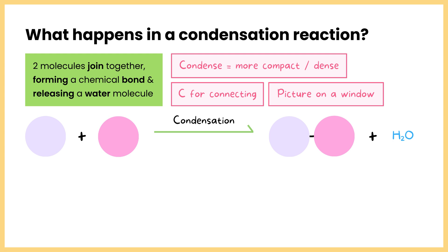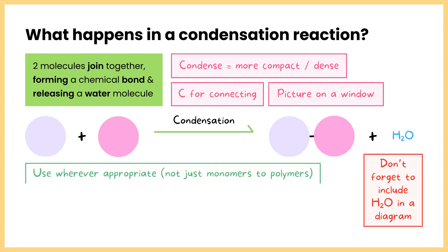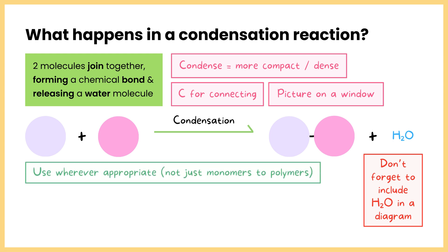Remember, if you're drawing a condensation reaction in the exam, it won't be a simple diagram — it will more likely be in the context of carbohydrates, where you're drawing a condensation reaction between two alpha glucose molecules. Just make sure you don't forget to include the water molecule H2O in the diagram. It's more likely that you'll be using this term wherever appropriate, because sometimes even just mentioning the term condensation reaction, naming the bond, and specifying that the water molecule is released could be a marking point.